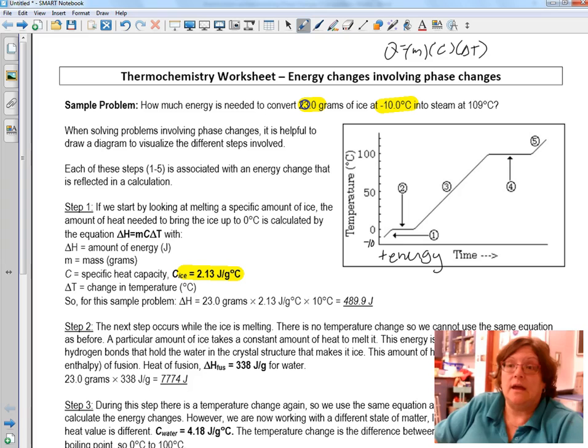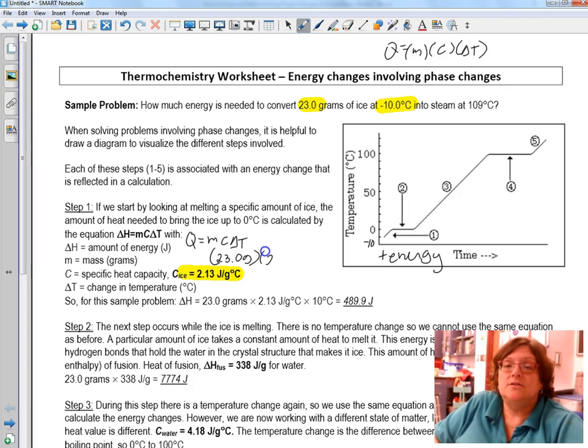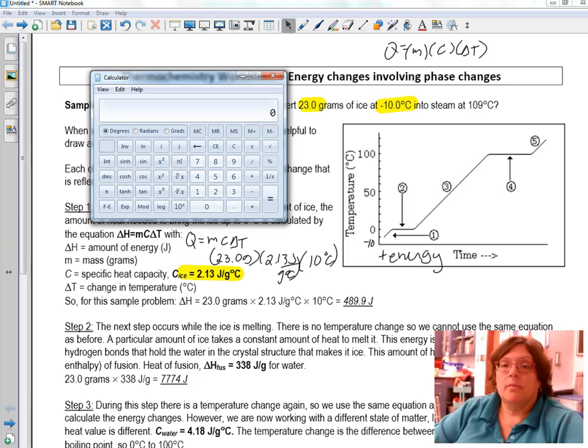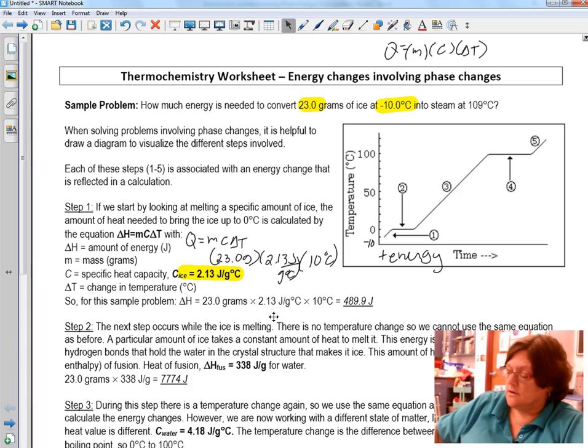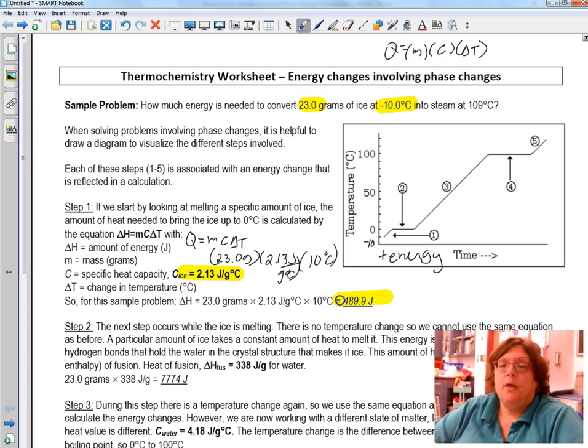So let's calculate the energy it takes to heat ice from negative 10 to zero. We'll use Q equals mcΔT. So the mass is 23 grams. The specific heat of ice is 2.13 joules over grams degrees Celsius. And our temperature change is 10 degrees. 23 times 2.13 times 10, 489.9. And look, it's already there calculated for you. So we've just figured out the energy it took to go from this point to this point on our little graph.